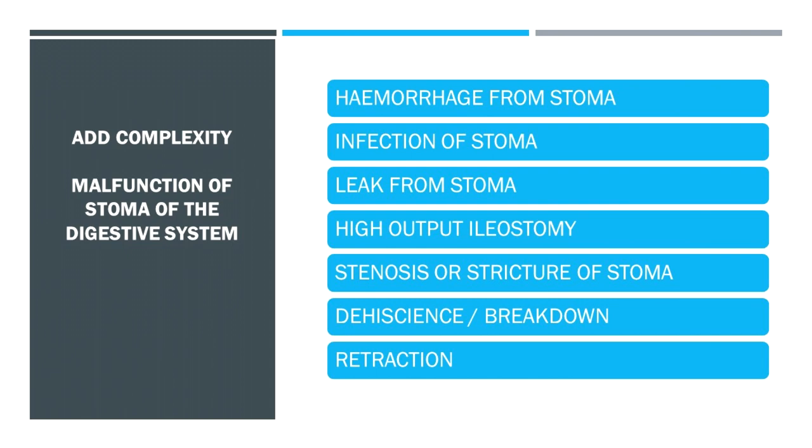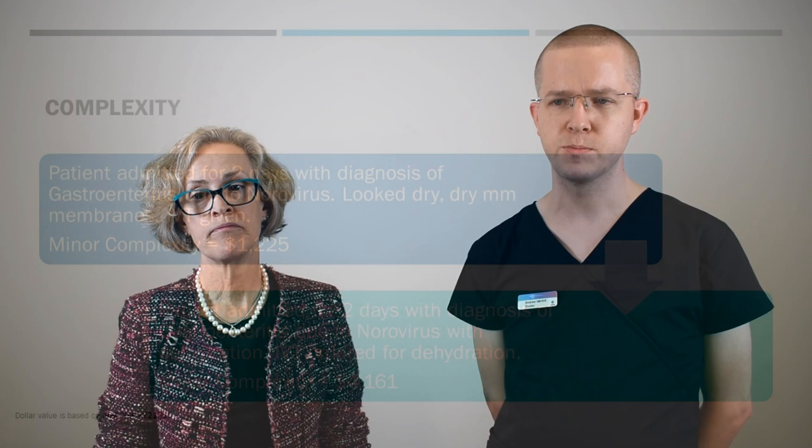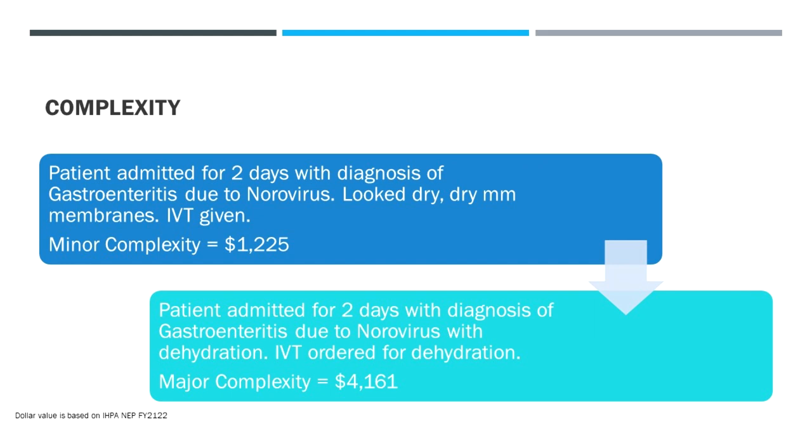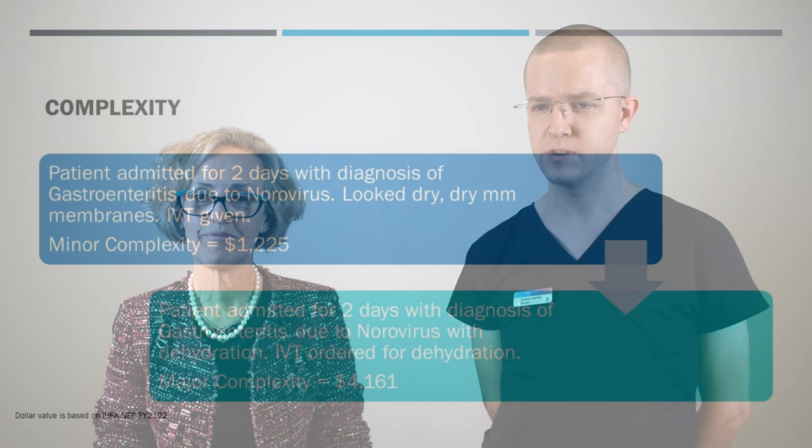Not looking through our tunnel vision and making it obvious to someone who's not in our craft group who can understand. So here's another example. So this patient's been admitted for two days with a diagnosis of gastroenteritis due to norovirus, reasonably common virus. The comment is they looked dry, dry mucous membranes, IV fluids given, so it's reasonably scant on the descriptive terminology there. And then minor complexity of $1,200 funding. Now just being in hospital for two days without doing anything or even seeing a doctor it's going to cost something like $5,000 to $8,000, you know, just the baseline. So we've got a problem there.